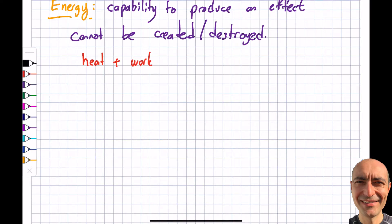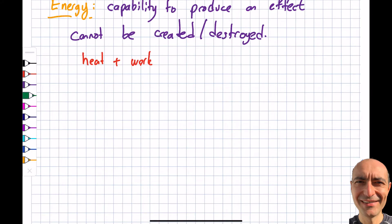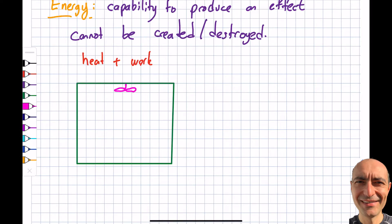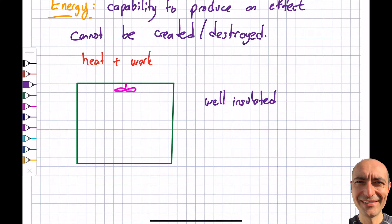Let me start with an easy example about energy. Right now I'm in my home office with a ceiling fan on. Let me draw my room. I have a fan in the ceiling. For this question, let's assume my room is well sealed — windows and doors are tightly closed, so no heat transfer from that angle — and also well insulated, meaning heat transfer through the walls is negligible.